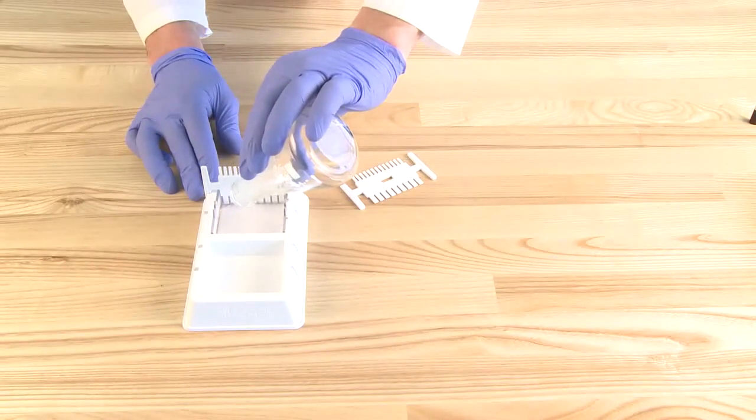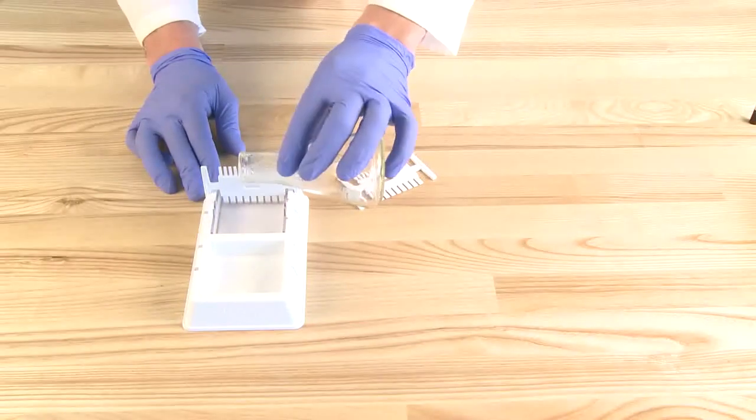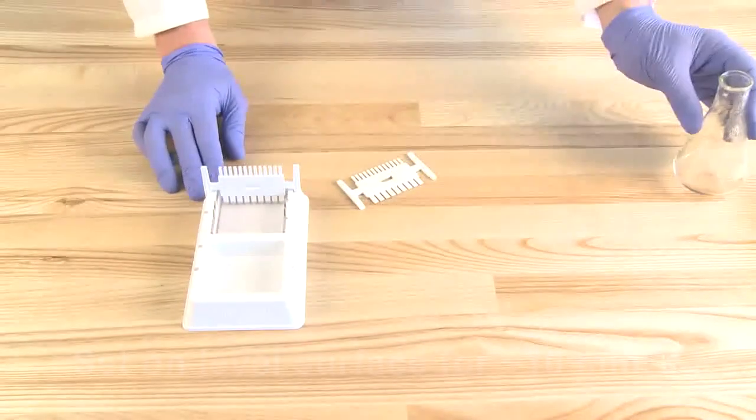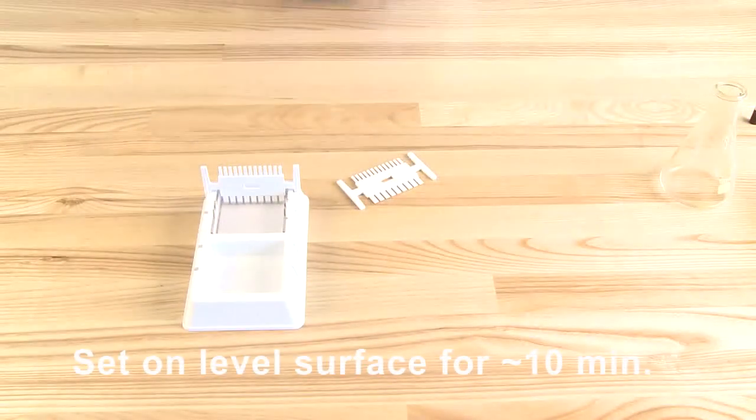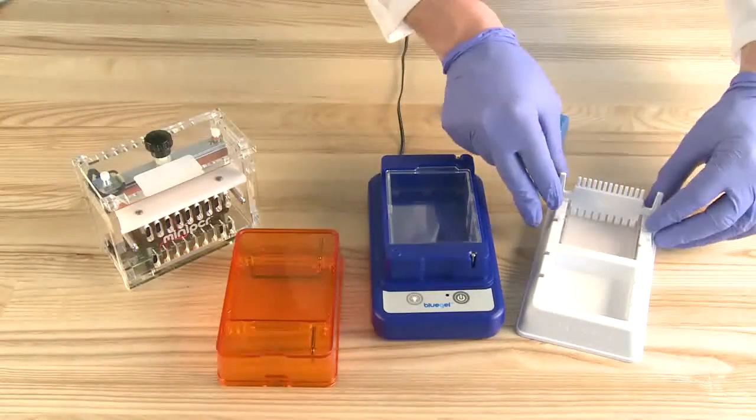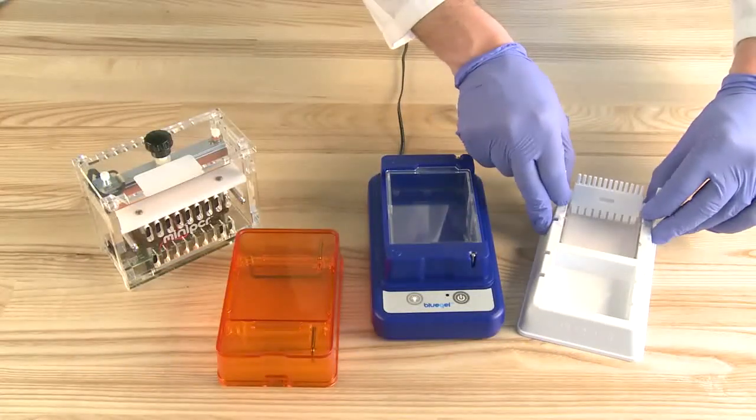If desired, you could also add a second comb midway through the gel. Let the gel set on a level surface until completely solidified. Then carefully remove the comb by gently pulling upwards.